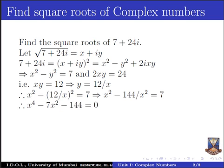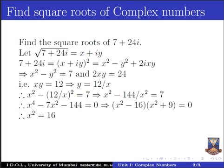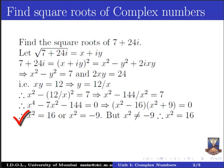Treating x square as the variable, this is a quadratic equation and we find its roots by factorizing. We get the two factors x square minus 16 and x square plus 9. Setting each factor to zero: x square minus 16 equal to 0 gives x square equal to 16, and x square plus 9 equal to 0 gives x square equal to minus 9. Since the square of a real number cannot be negative, we discard x square equal to minus 9. The only valid answer is x square equal to 16.